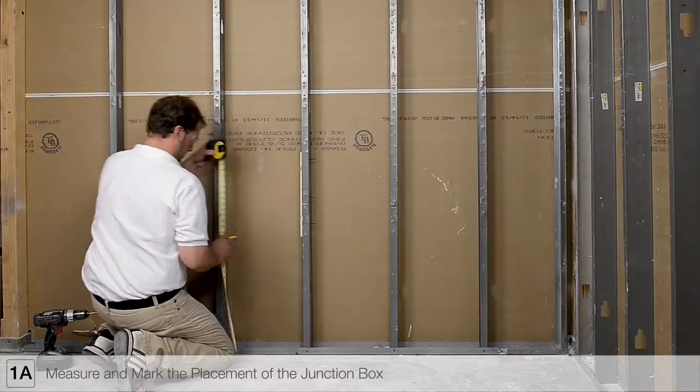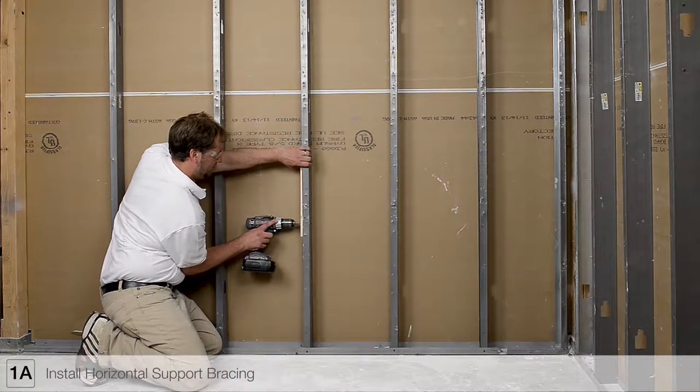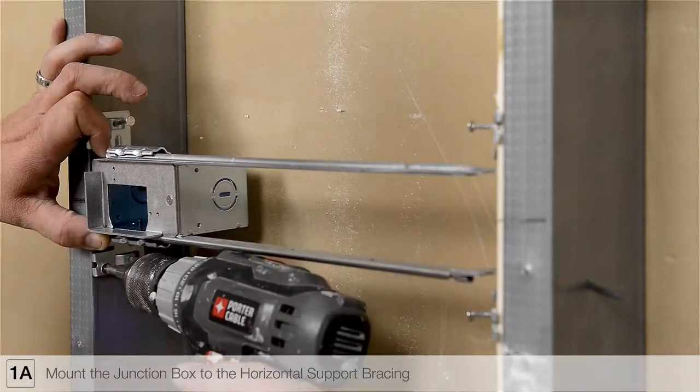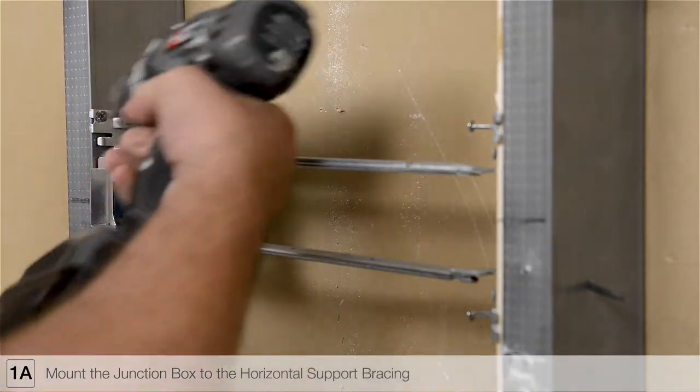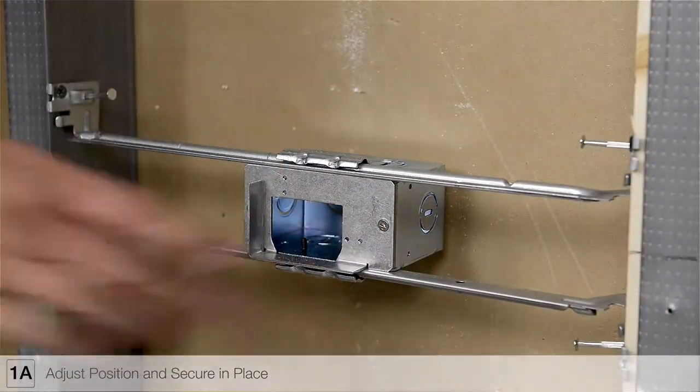Measure and mark the placement of the junction box. Install horizontal support bracing. Mount the junction box to the horizontal support bracing. Adjust the junction box to match the marked position and secure in place.